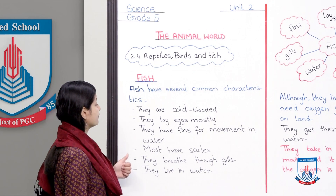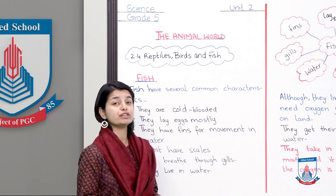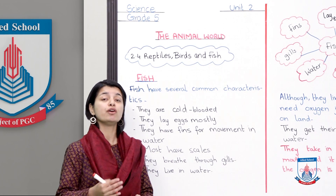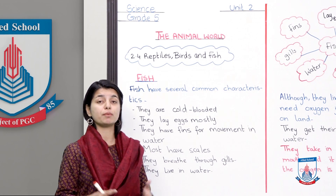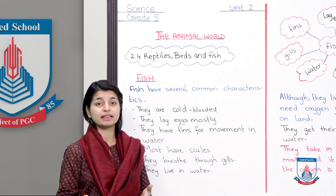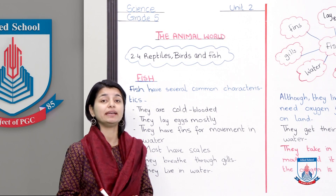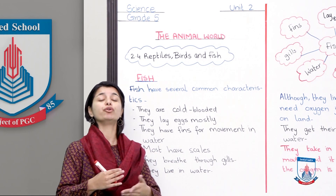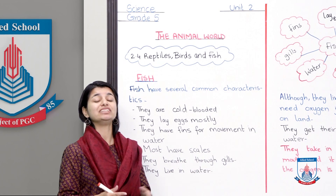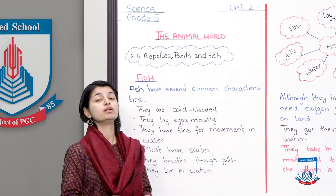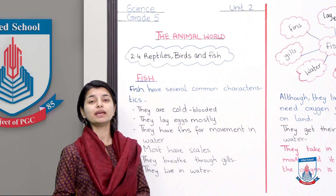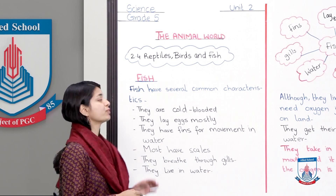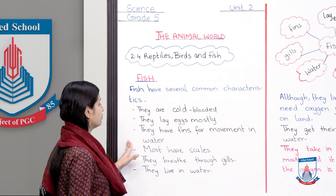The first characteristic of fish is that they are cold-blooded. Cold-blooded animals are those whose body temperature changes with their surroundings — they can't regulate their body temperature. If it's cold, it will drop; if it's hot, it will rise. Fish are cold-blooded, just like reptiles. Whereas birds and mammals are warm-blooded. So fish being cold-blooded is what you have to remember.